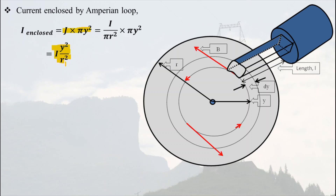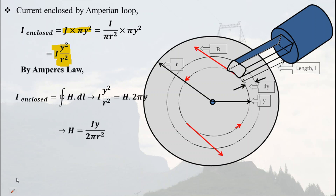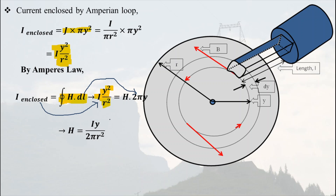Ampere's law states that the current enclosed in a path equals the closed integral of H·dl. So I_enclosed = I × y²/r² = H × 2πy (since the circumference of the Amperian loop of radius y is 2πy). From this we get H = Iy / (2πr²).